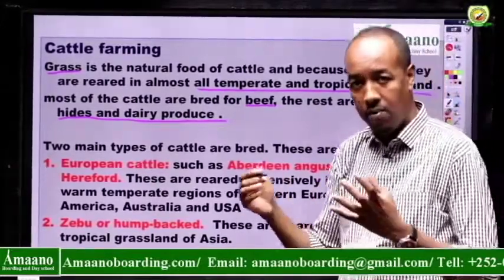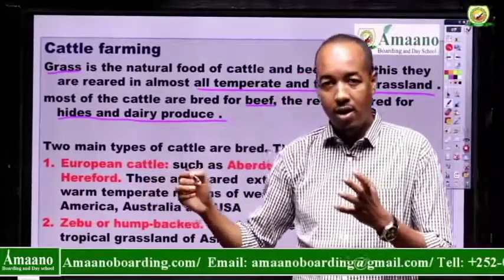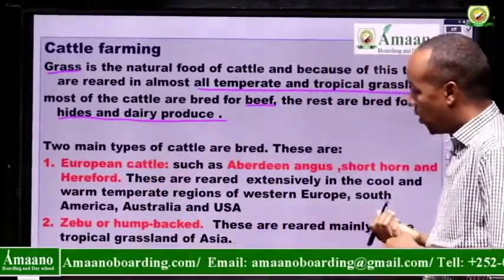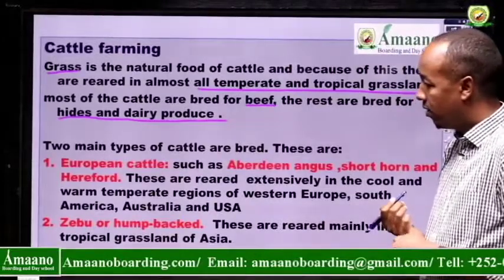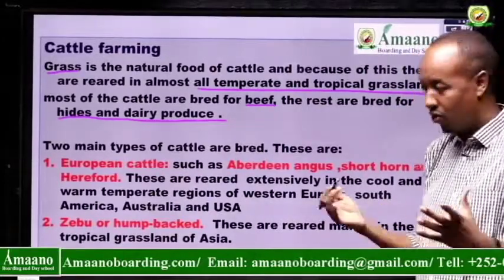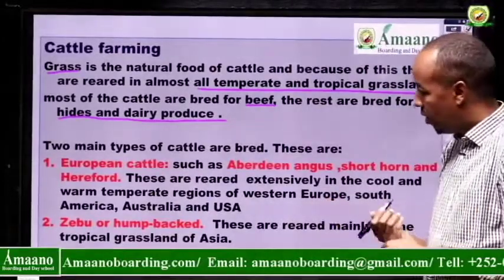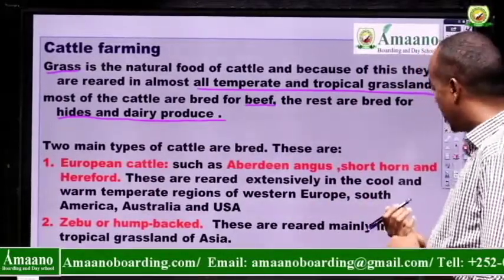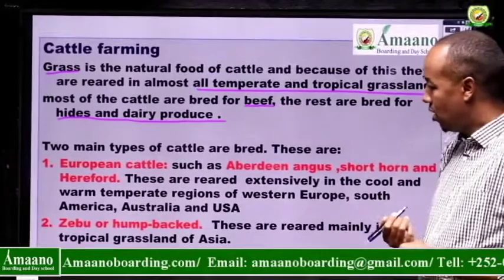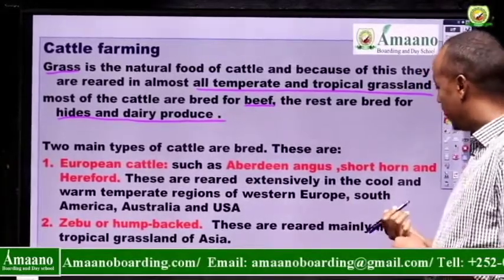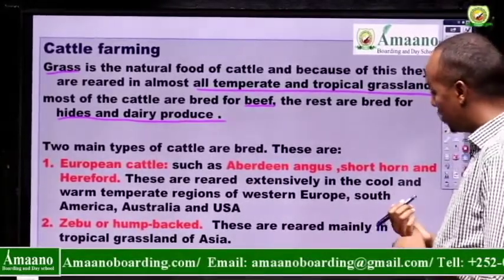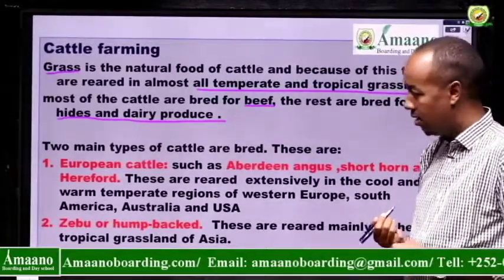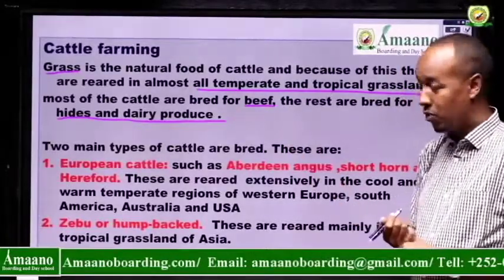Dairy is the term used when cattle are reared for milk purposes. What are the main breeds of cattle? Two main breeds of cattle are found across the world. The first one is European cattle — examples are Aberdeen Angus, Shorthorn, and Hereford. These are reared extensively in the cool and warm temperate regions of Western Europe, South America, Australia, and the USA.